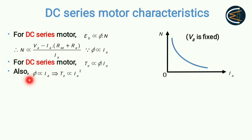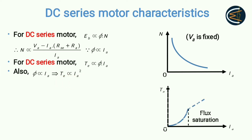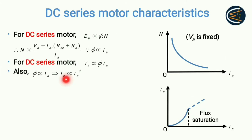Since flux is directly proportional to armature current, we can say that torque is directly proportional to the square of the armature current (T ∝ Ia²). If we plot the graph between electromagnetic torque and armature current, we get this parabolic relationship, because torque is proportional to Ia².